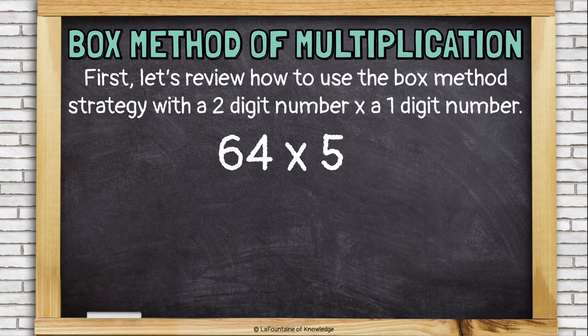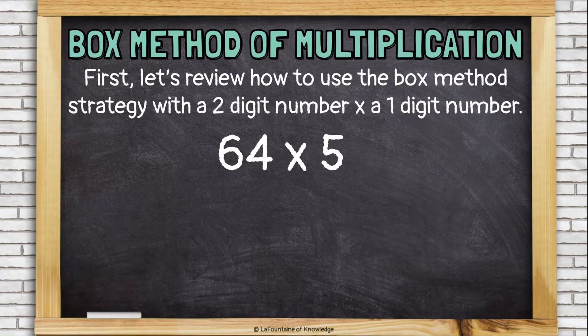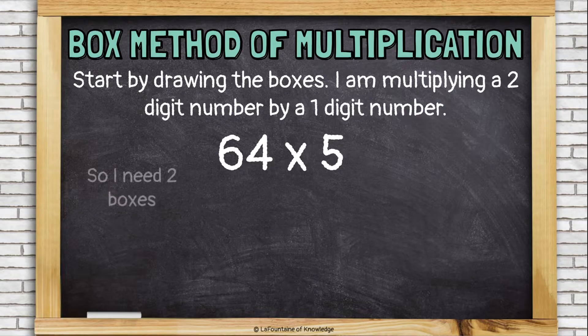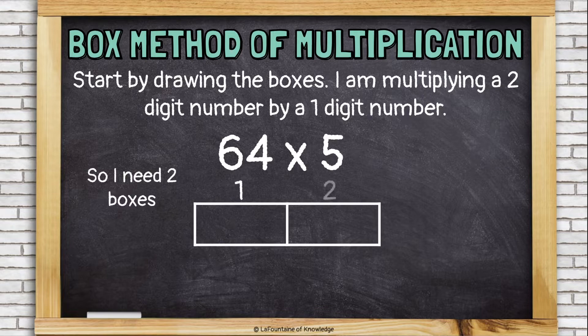First, let's review how to use the box method strategy with a two-digit number times a one-digit number. We'll multiply 64 times 5. Start by drawing the boxes. I'm multiplying a two-digit number by a one-digit number, so I need two boxes, one, two, by one box.